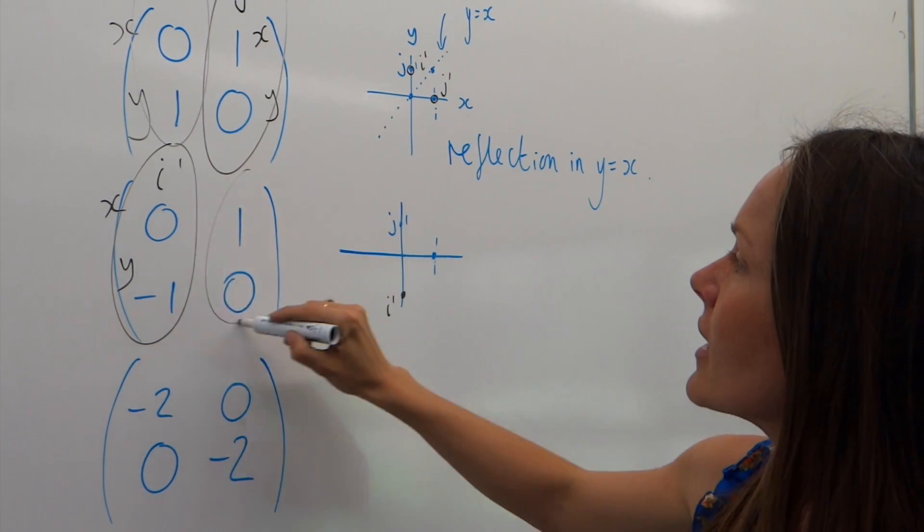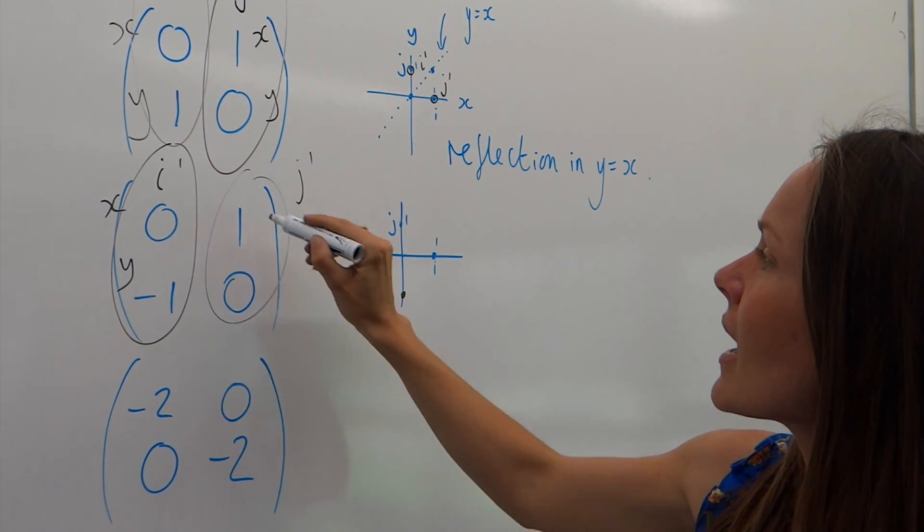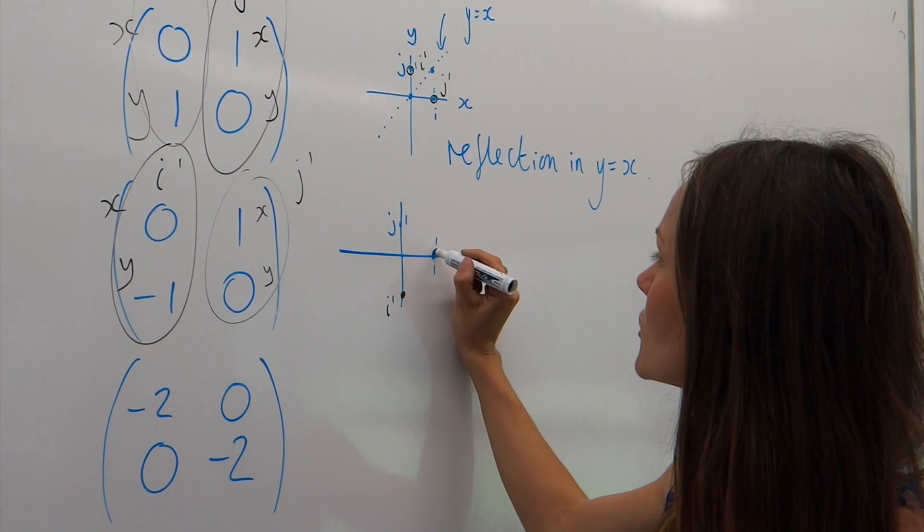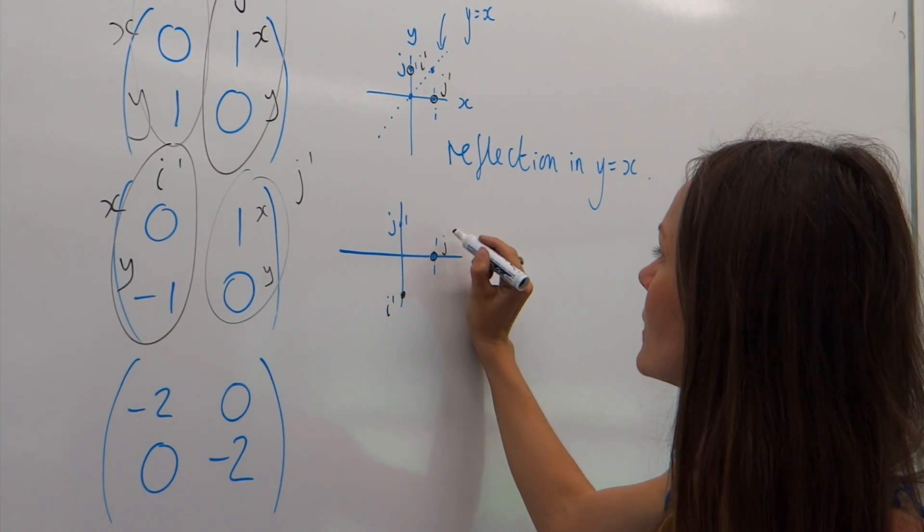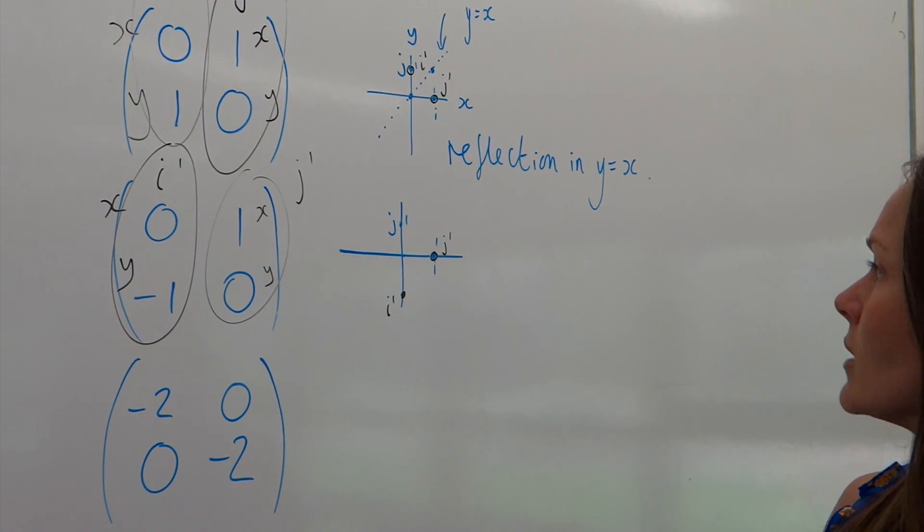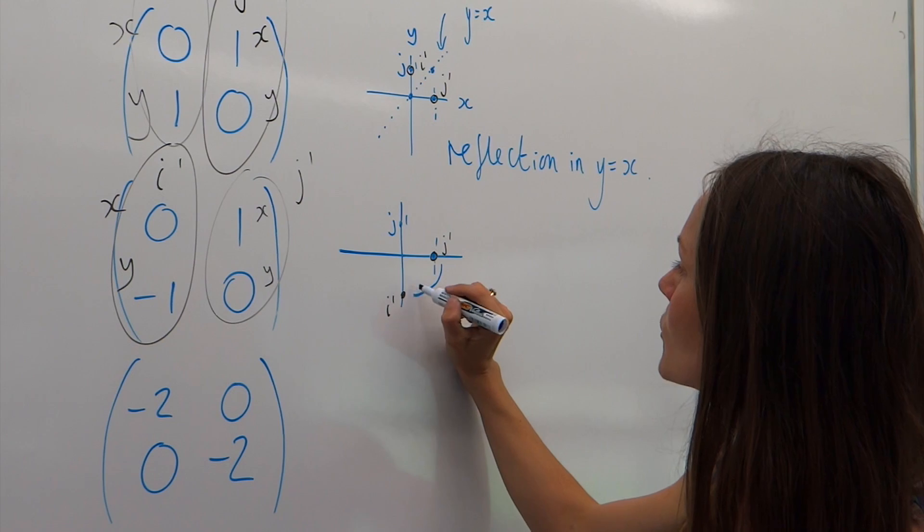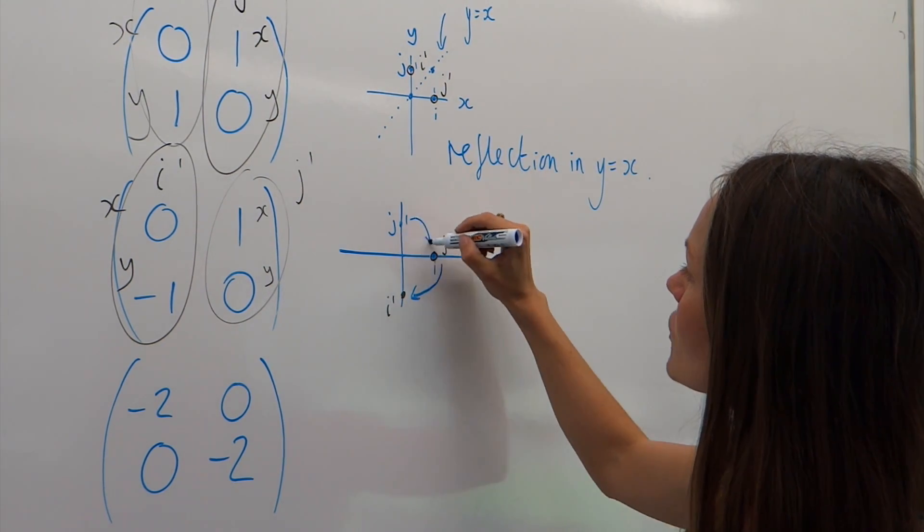Now, j is at x equals one, y is zero, which is where i used to be. So, on this one, i has moved to here, and j has moved to here.